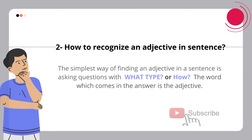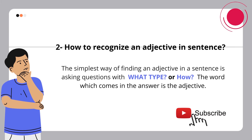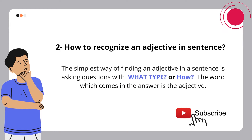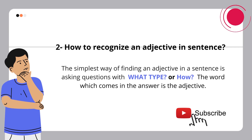How to recognize an adjective in a sentence? The simplest way of finding an adjective in a sentence is asking questions with 'what type' or 'how'. The word which comes in the answer is the adjective.